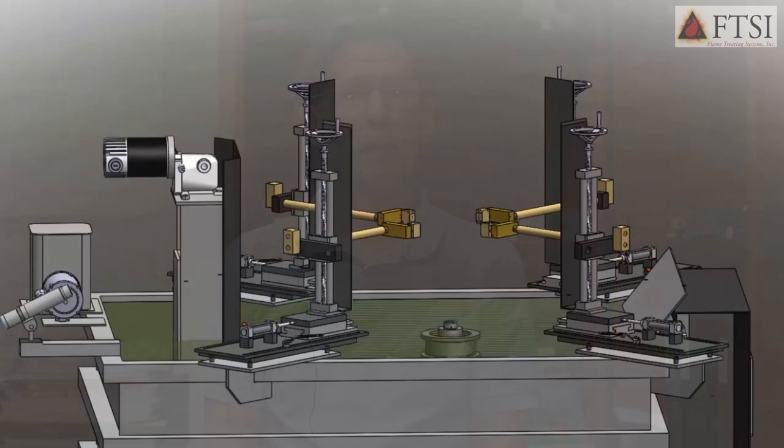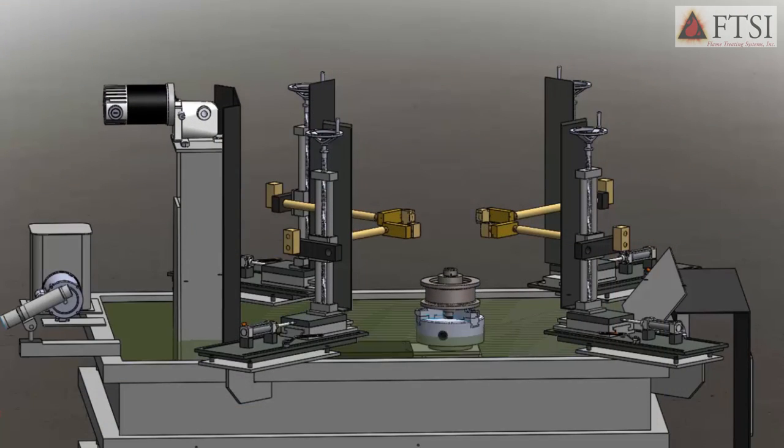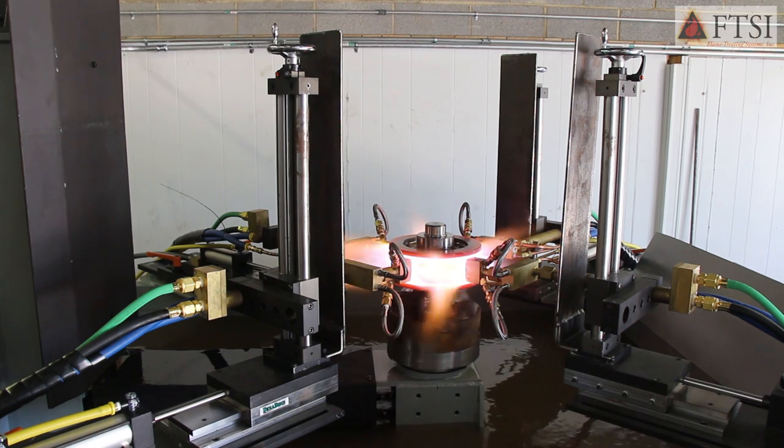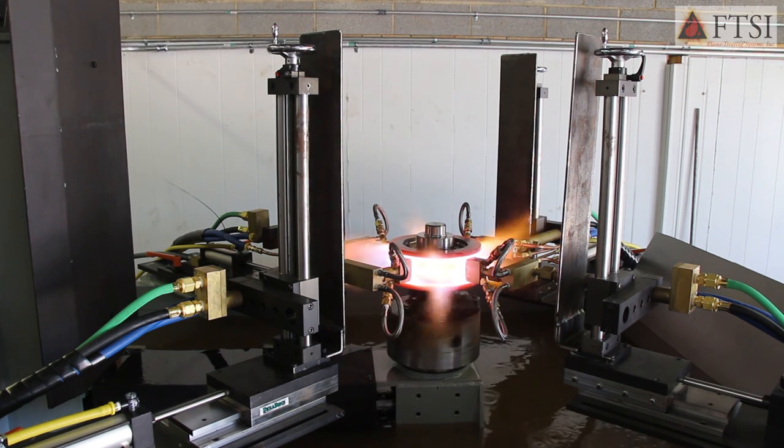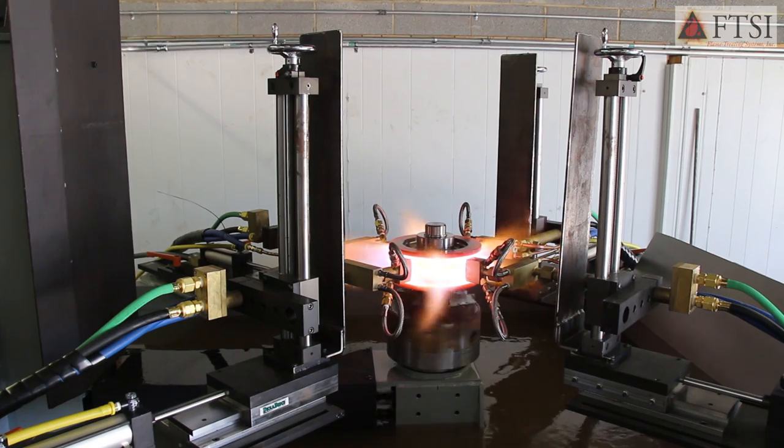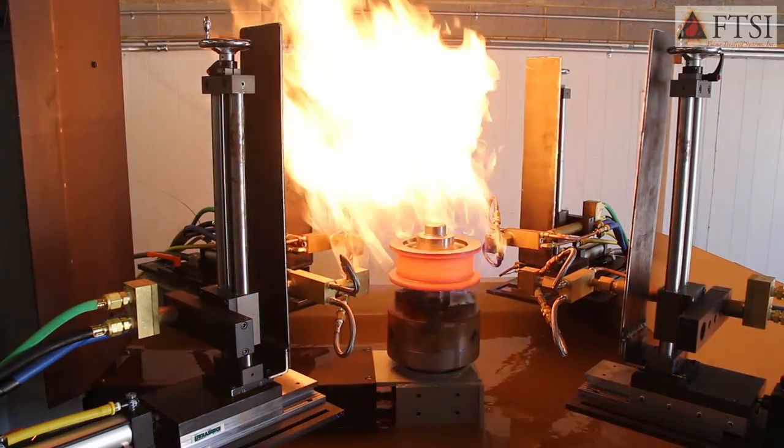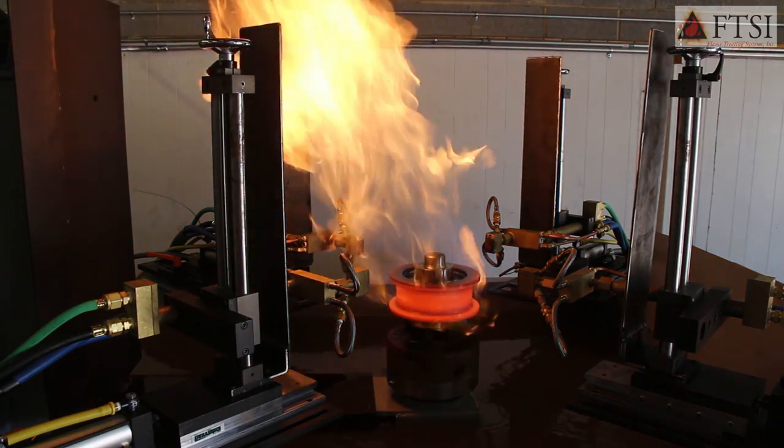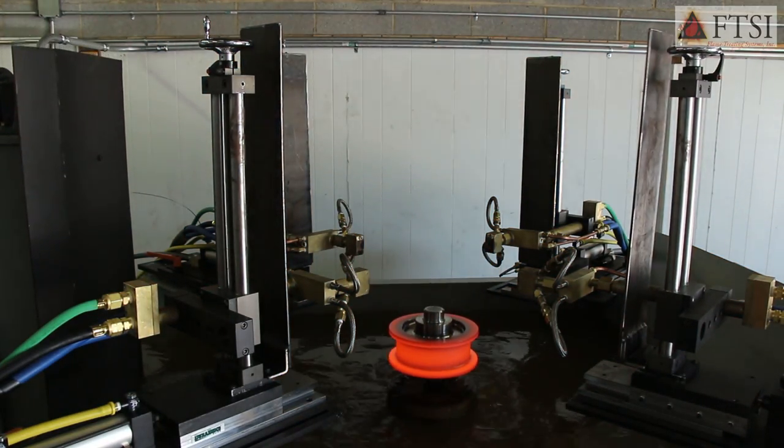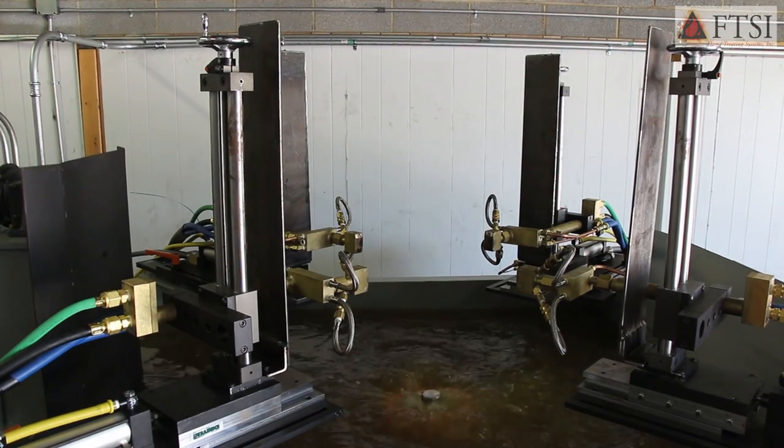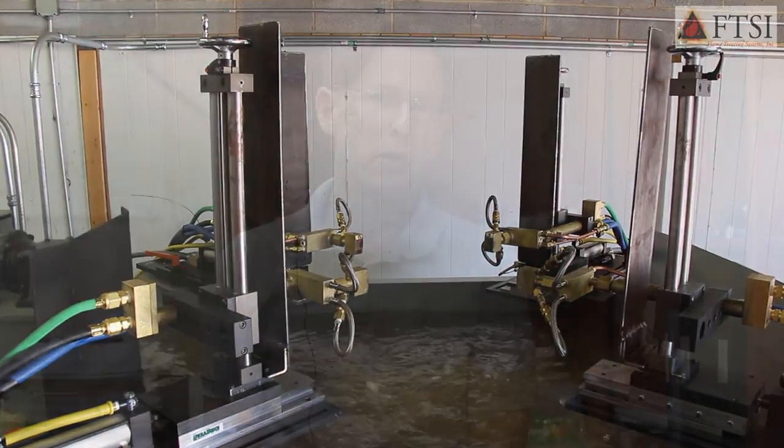And so this machine can also do gears. It can spin harden gears, sprockets, several different kinds of parts. It can also do IDs, internal diameters of parts too, so that you can spin heat the inside of something and then take that down into the quench. So this machine has a lot of versatility to it.